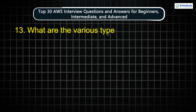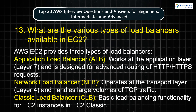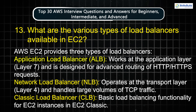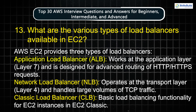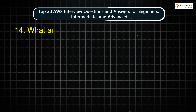Question 13: What are the various types of load balancers available in EC2? AWS EC2 provides three types of load balancers. The Application Load Balancer works at the application layer, layer 7, and is designed for advanced routing of HTTP and HTTPS requests. The Network Load Balancer operates at the transport layer, layer 4, and handles large volumes of TCP traffic. The Classic Load Balancer provides basic load balancing functionality for EC2 instances in EC2 Classic.